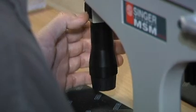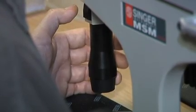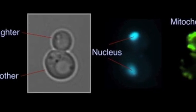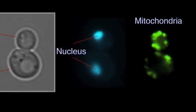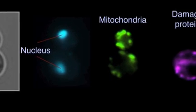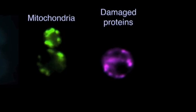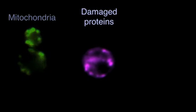Thomas Nyström and his colleagues are studying aging and rejuvenation using budding yeast as a model system. Yeast rejuvenation includes a segregation of damaged proteins where the aged mother cell retains most of the damage during the process of cytokinesis. This rejuvenation requires the gene SIR2, which encodes a conserved protein shown to affect the rate of aging in different organisms.